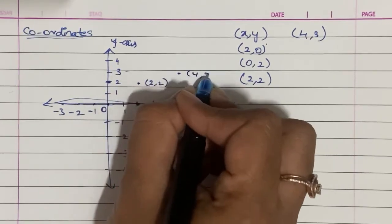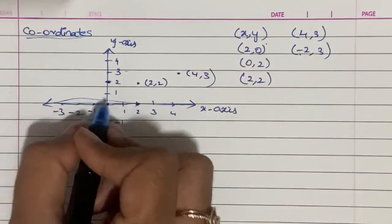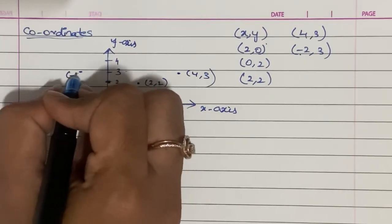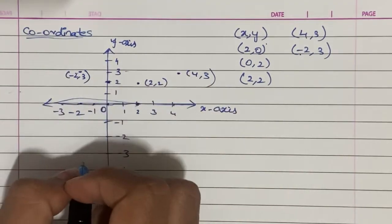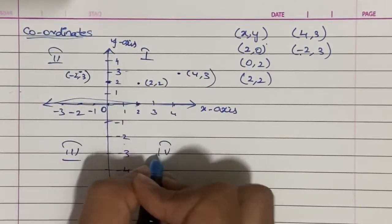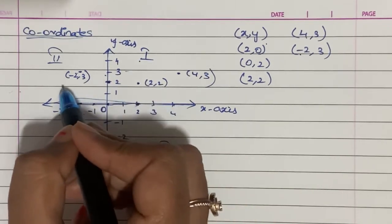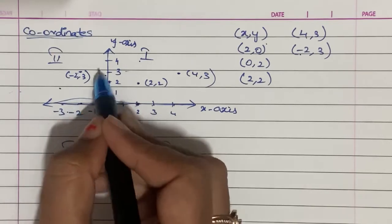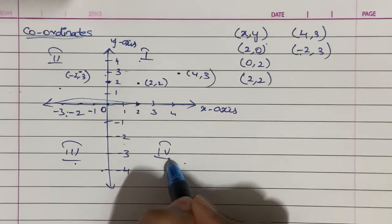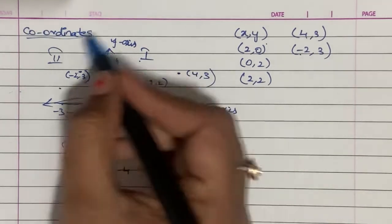For example, the point (−2, 3): x-axis is minus 2, y-axis is 3, and this point is in the 2nd quadrant. There are 4 parts: 1st quadrant where both x and y are positive; 2nd quadrant where x is negative and y is positive; 3rd quadrant where both x and y are negative; 4th quadrant where y is negative and x is positive. So this is about coordinates.